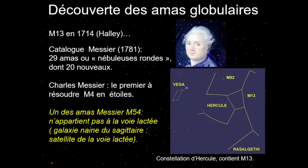En faisant ça, Messier a répertorié plein d'objets qui n'étaient pas des comètes et a fait énormément pour la nomenclature astronomique. Le plus célèbre est bien sûr M13 — l'amas d'Hercule — qu'on repère très facilement dans un instrument quand on fait de l'astronomie amateur.